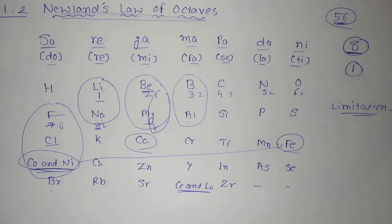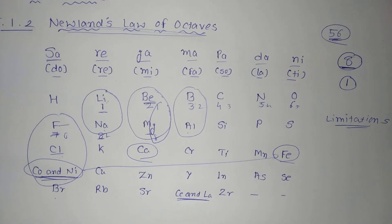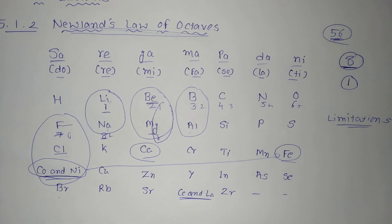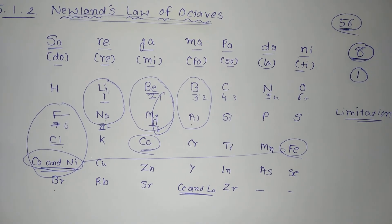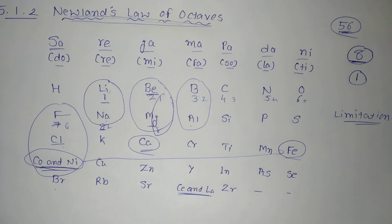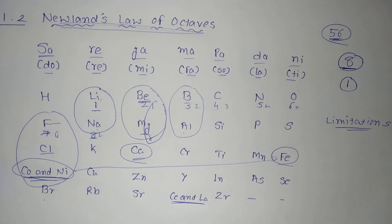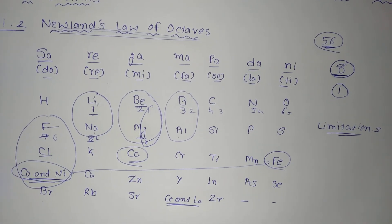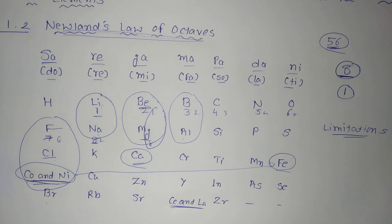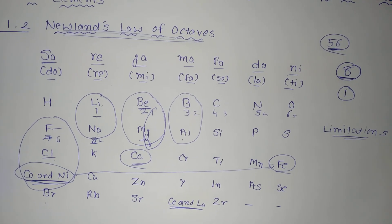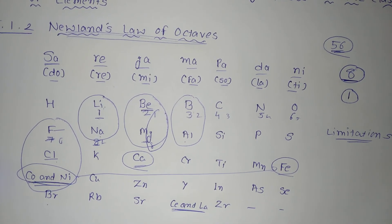Hence, Newland's classification also failed, and a new classification was required. Newland's Law of Octave worked well with lighter elements only, and higher elements after calcium were not covered. Other chemists and scientists kept trying, and fortunately, Mendeleev's periodic table was prepared. In the next video, we will see Mendeleev's periodic table.